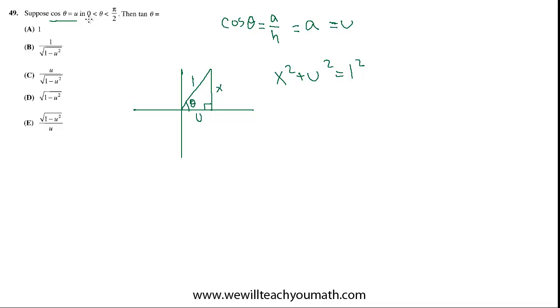Then they're telling us that this takes place for theta between 0 and pi over 2, which is just saying that it takes place in the first quadrant. And the reason that's important is because if it was some other quadrant, the tangent could end up being negative. If it was over in the second quadrant or the fourth quadrant, the tangent would be negative. But if it's in the first quadrant, the tangent's going to be positive, so we can be sure about that.